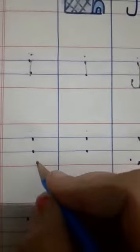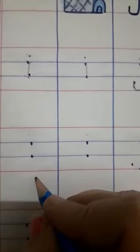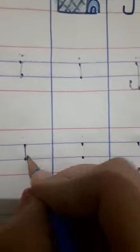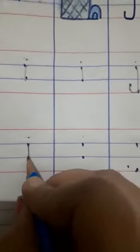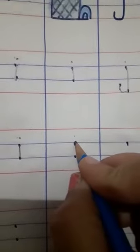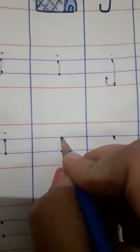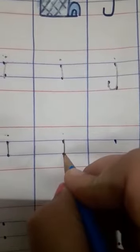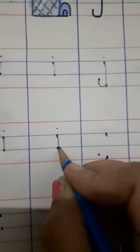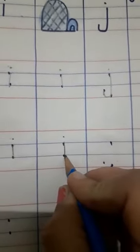Look. First put a small standing line and put a dot. This is a I. Again, first put a standing line and put a dot. This is a I. I for igloo.